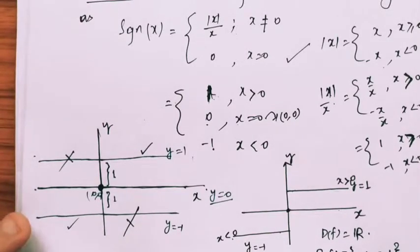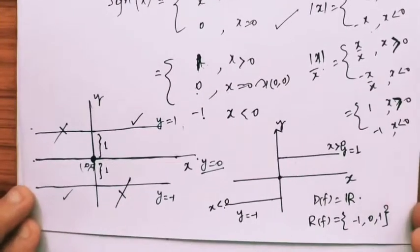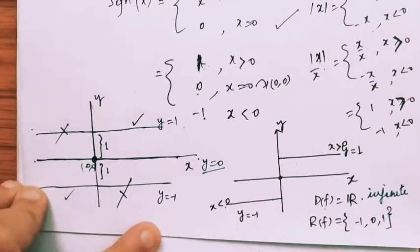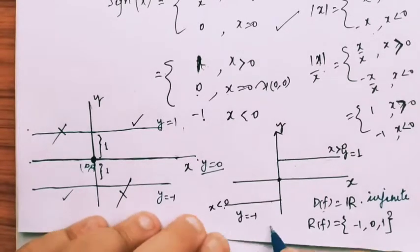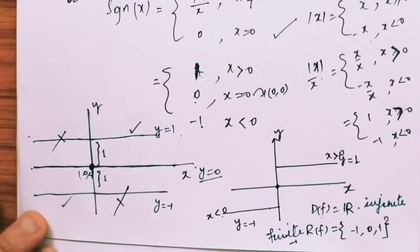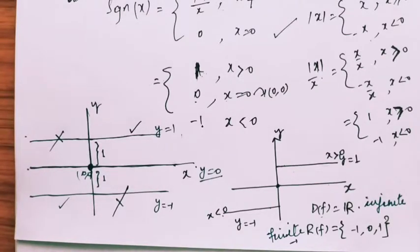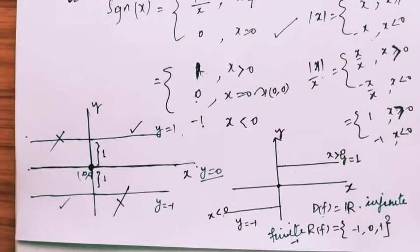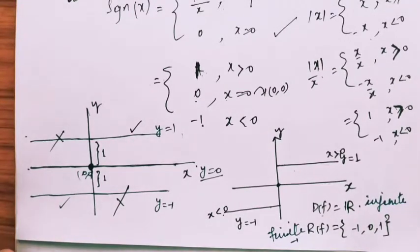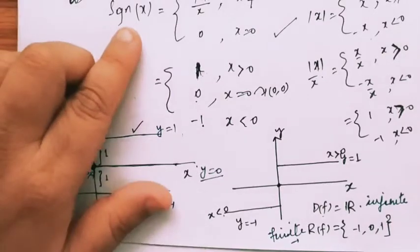Look at how this example becomes very important. The domain of the function is an infinite set, but the range of the function is a finite set. So likewise constant function, this function also has a range that is a finite set. This is an example in which the domain is an infinite set and the range is a finite set. This is the information regarding the graph of the signum function.